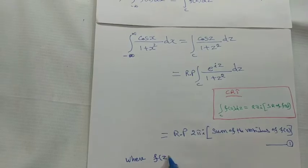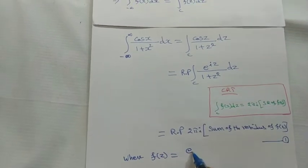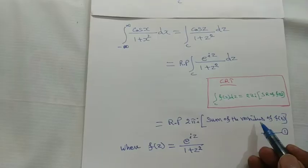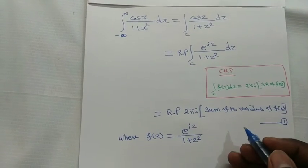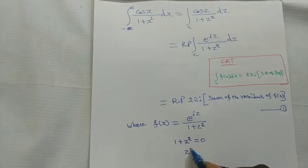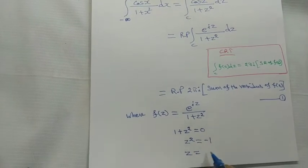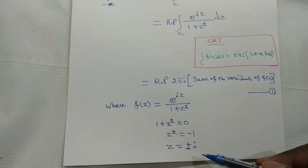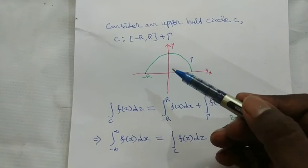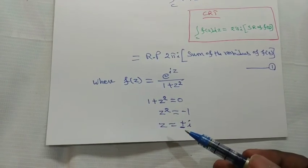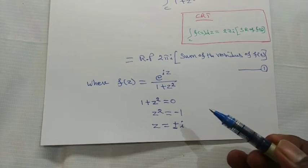Here f(z) equals e^(iz) divided by (1 plus z squared). To find the residues, first find the poles by equating the denominator to 0: 1 plus z squared equals 0, so z squared equals minus 1, giving z equals plus or minus i. Both are simple poles. From the diagram, positive imaginary values lie inside circle C, so z equals i lies inside and z equals minus i lies outside.